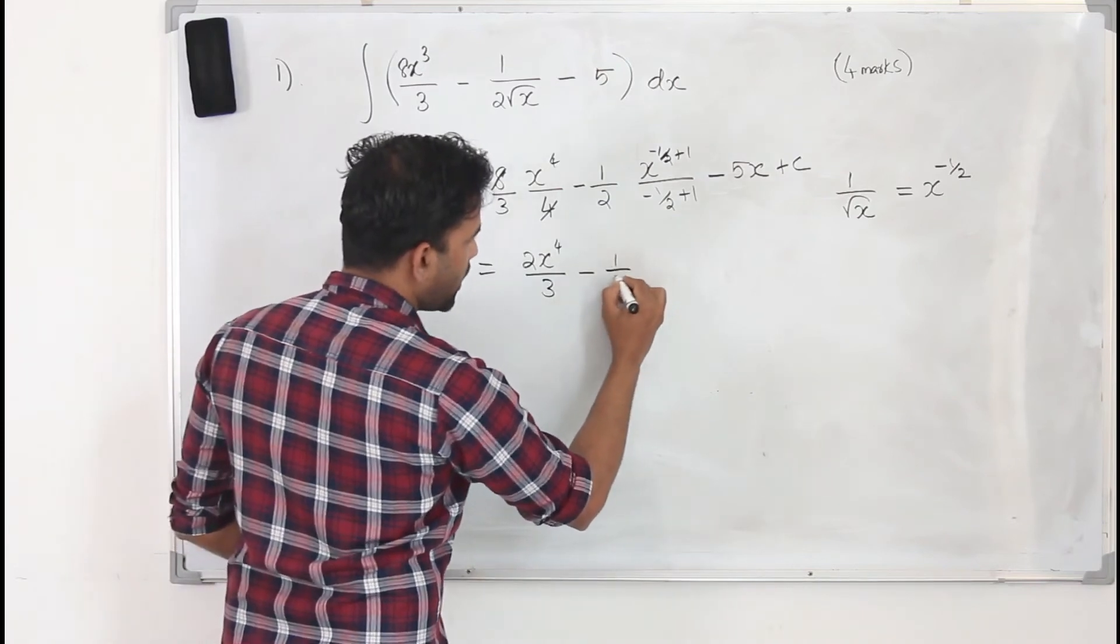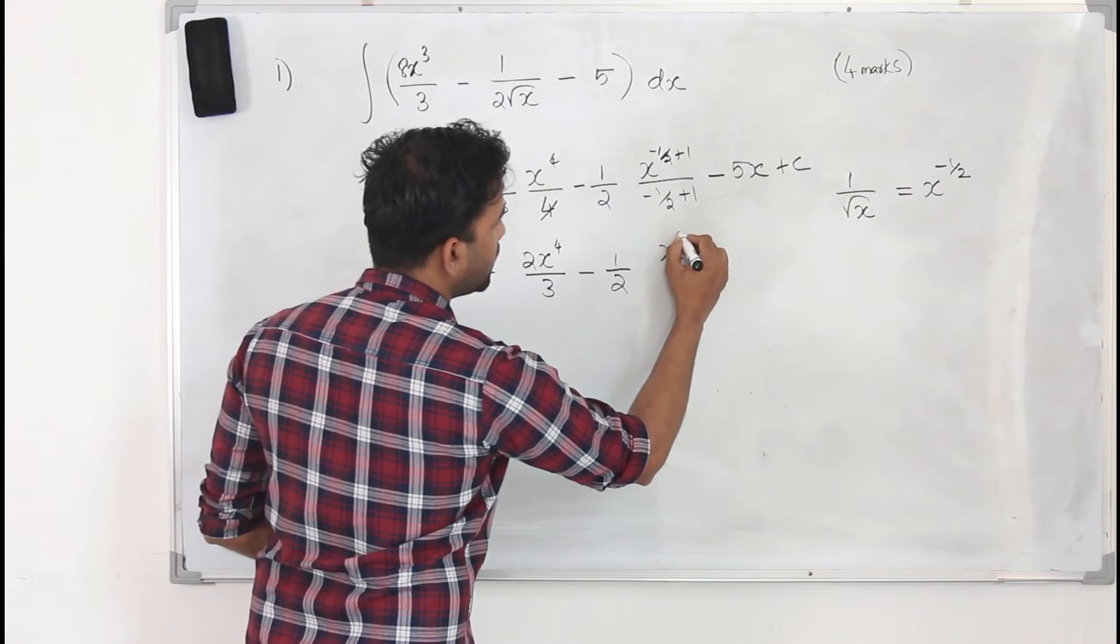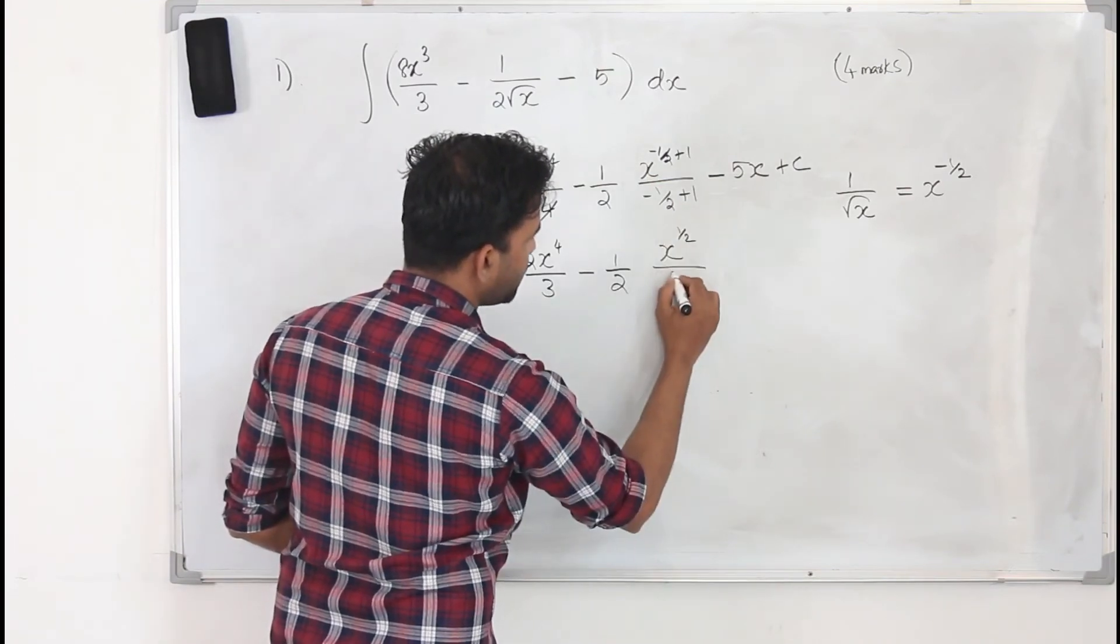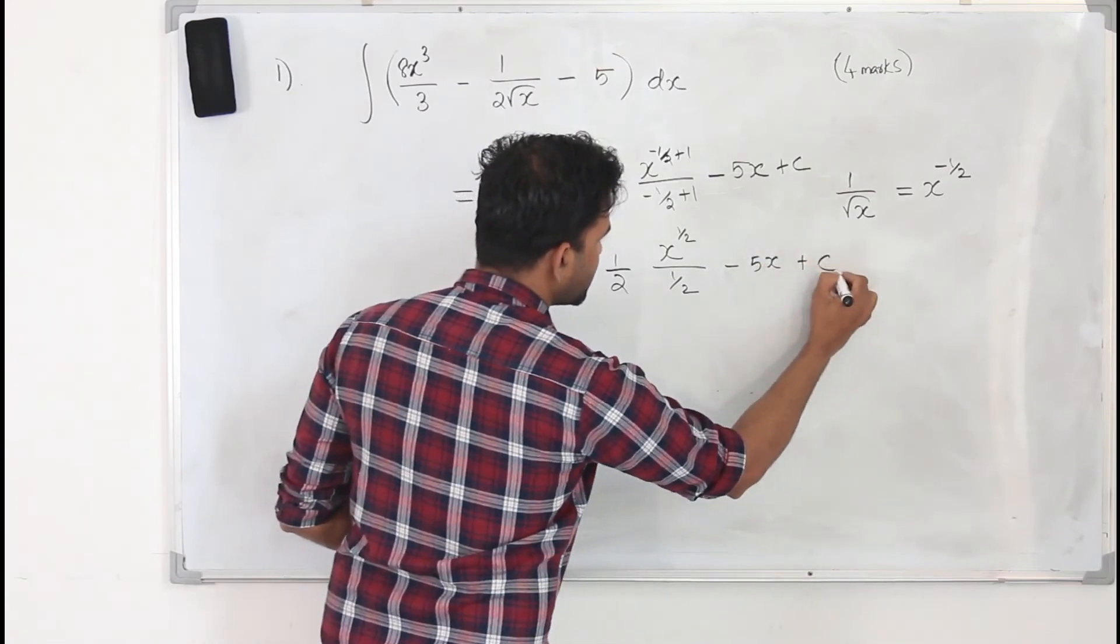Minus 1 upon 2. x to the power minus 1/2 plus 1 is plus 1/2, divided by plus 1/2. Minus 5x plus c.